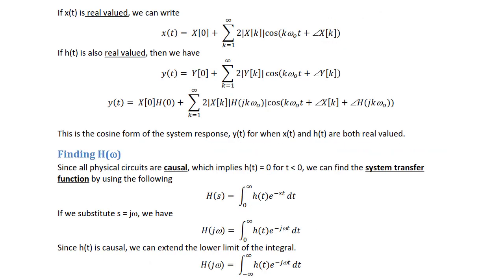If x(t) is real valued, we can write x(t) equals x(0) plus the summation from k equals 1 to infinity of 2 times the magnitude of x(k) times cosine(kω₀t plus the angle of x(k)). If h(t) is real valued, then y(t) equals y(0) plus the summation from k equals 1 to infinity of 2 times the magnitude of y(k) times cosine(kω₀t plus the angle of y(k)). We can also write this as y(t) equals x(0) times h(0) plus the summation from k equals 1 to infinity of 2 times the magnitude of x(k) times h(jkω₀) times cosine(kω₀t plus the angle of x(k) plus the angle of h(jkω₀)). This is the cosine form of the system response y(t) for when x(t) and h(t) are both real valued.